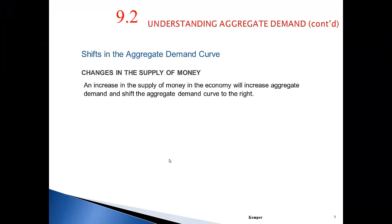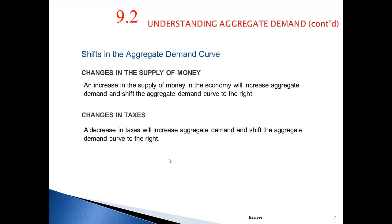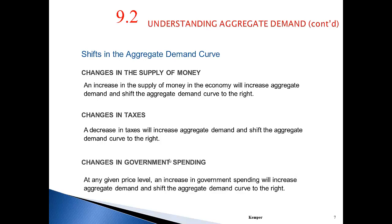Continuing the discussion of aggregate demand: at any given price level, an increase in government spending will increase aggregate demand and shift it out to the right. As long as prices stay the same, we will see a wealth effect.